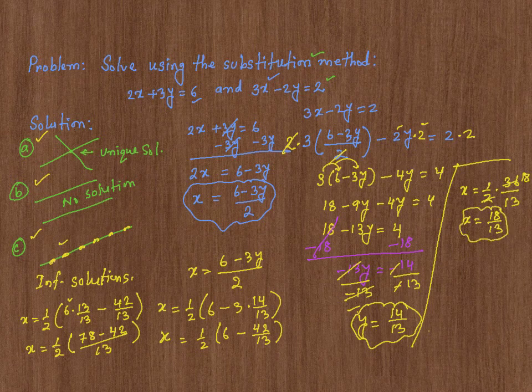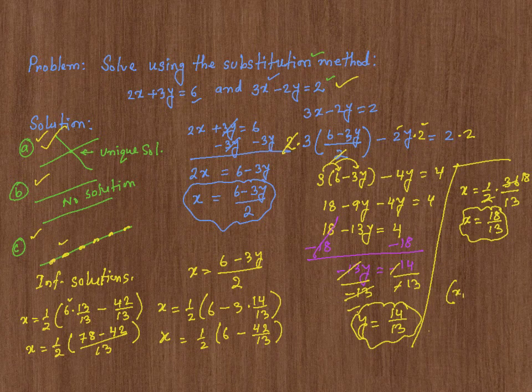So this system, as it is, has a solution which falls in this category, and that solution is x comma y equals 18 over 13 comma 14 over 13, and that's what it is.